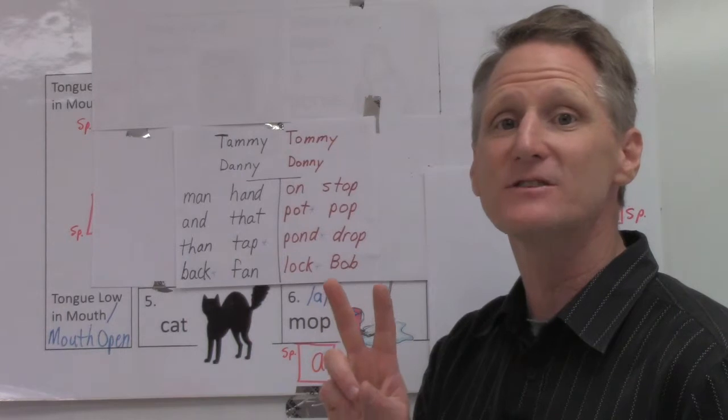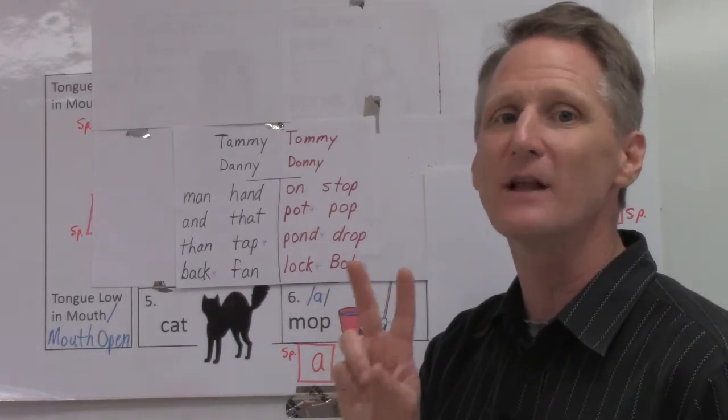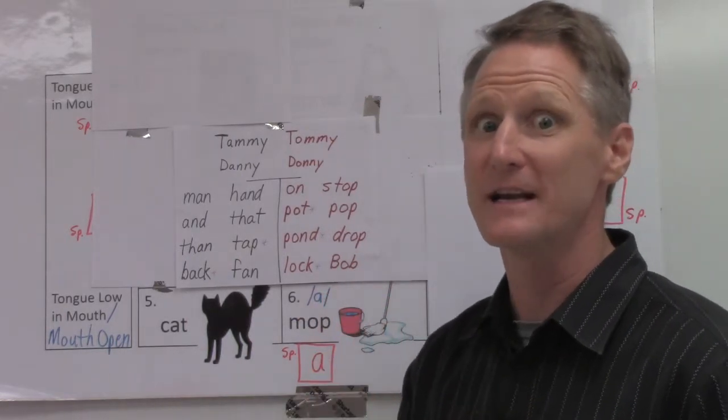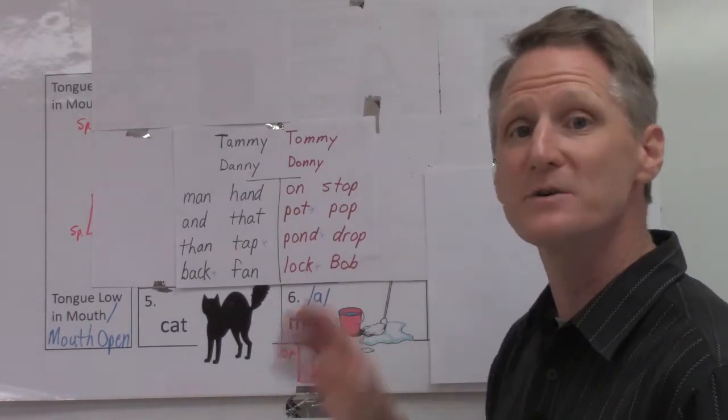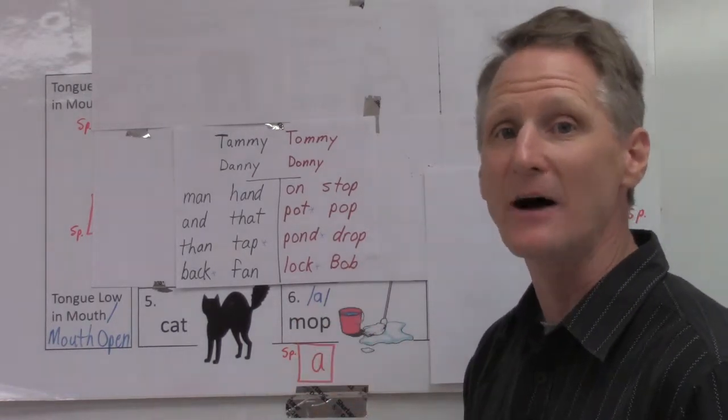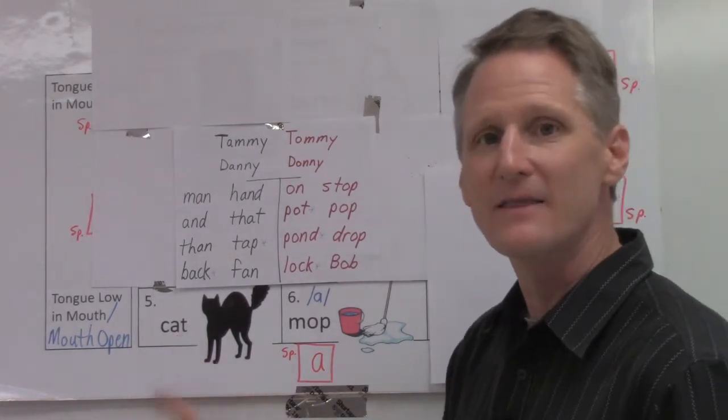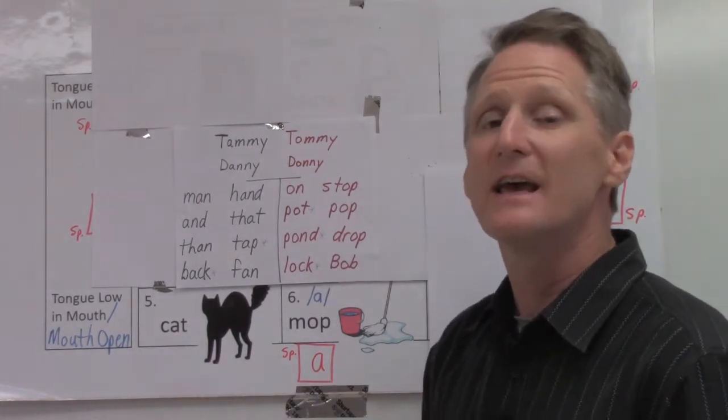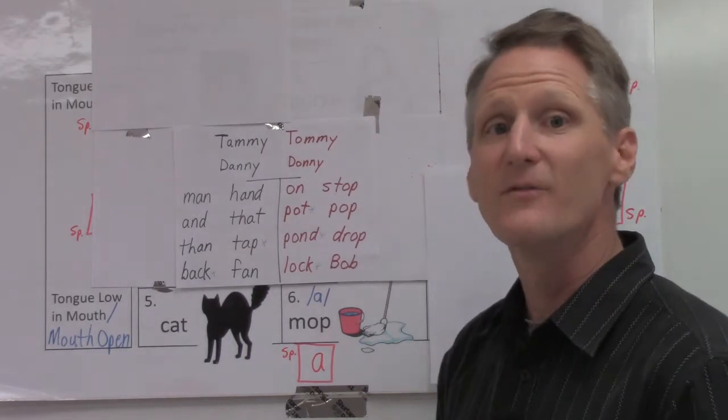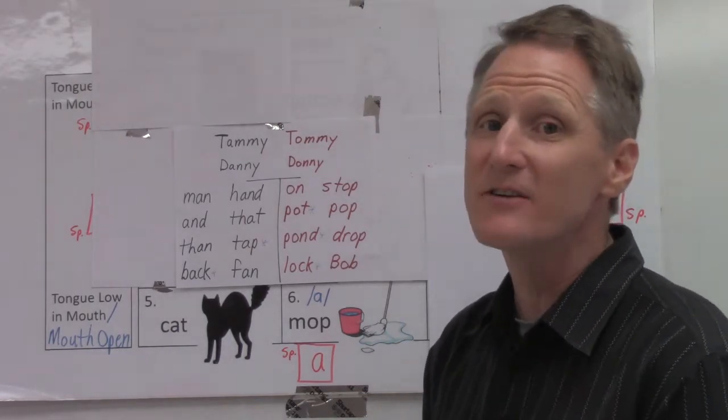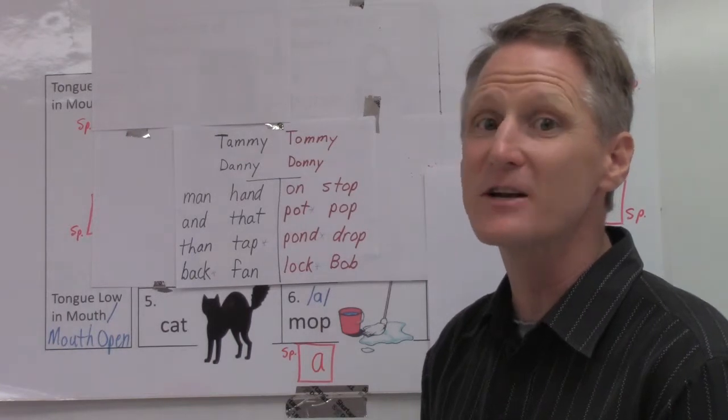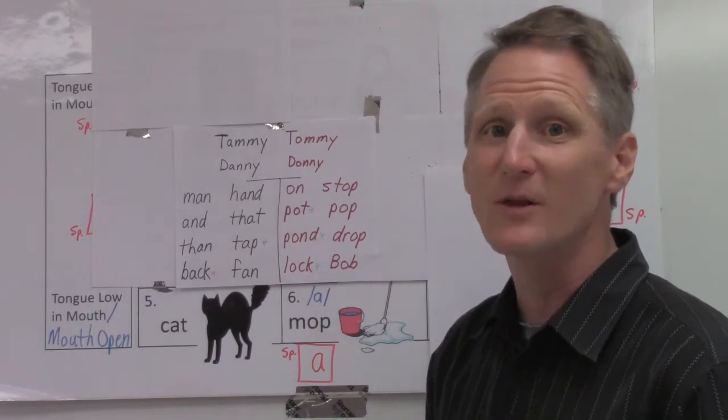In English, each vowel letter has a double identity and other identities after that. The O in English is most commonly used to indicate ah. It's not the letter A. The letter A in English indicates very often sound number five, which is close to sound number six, but it's not the same.